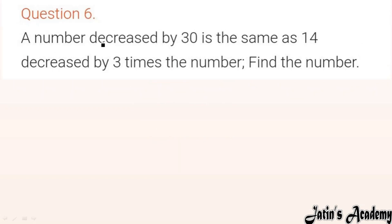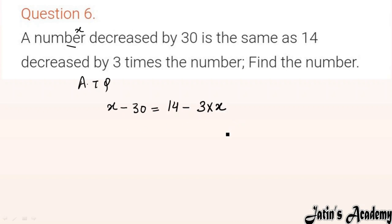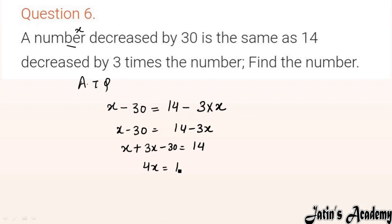Question 6: A number decreased by 30 is the same as 14 decreased by 3 times the number. Let the number be x. So x minus 30 equals 14 minus 3x. Bringing variables together: x plus 3x equals 14 plus 30, giving 4x equals 44. So x equals 11. The number is 11.